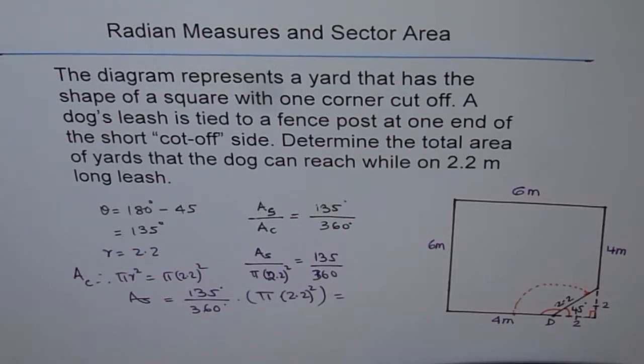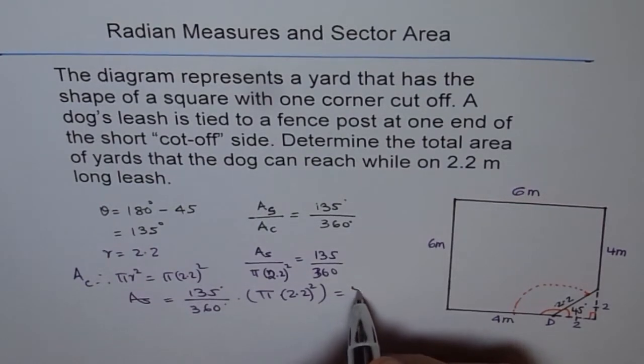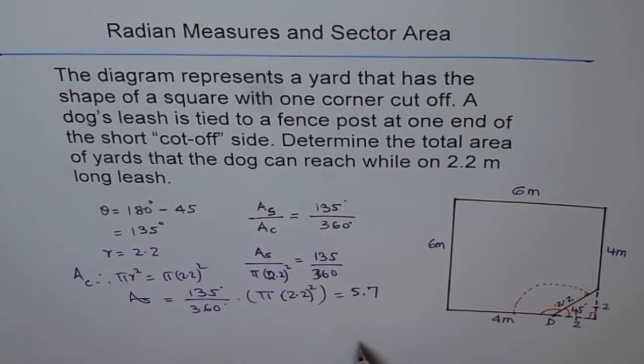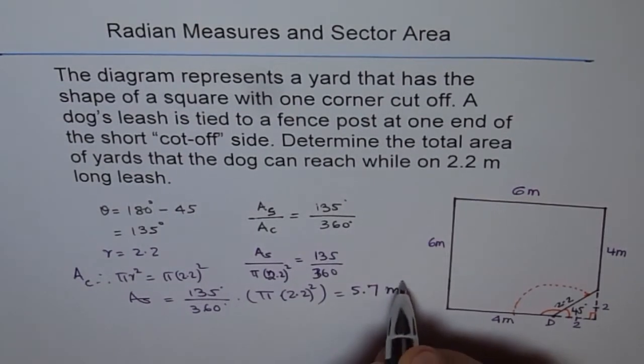So let's use the calculator. 135 divided by 360 times pi times 2.2 squared gives us 5.701, and we can write this as 5.7 meter squared.